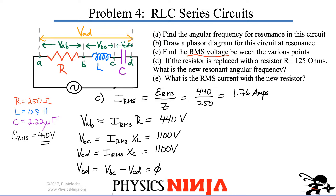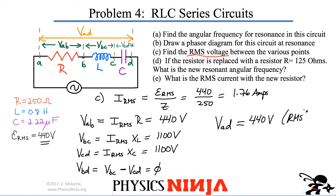The voltage across the entire network from points A to D must equal the RMS voltage of the source, which is 440 volts. Again, all of these are RMS values.